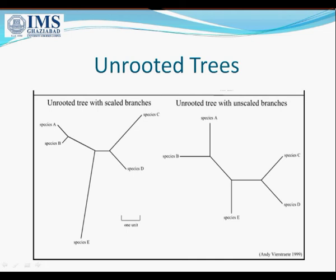In unrooted trees, we can see two types: unrooted trees with scaled branches and unrooted trees with unscaled branches. In the case of scaled branches, all these branches have different lengths. But in unrooted trees with unscaled branches, the branch lengths are equal — from each leaf point to the central node, the length is the same. This is the concept of unrooted trees.